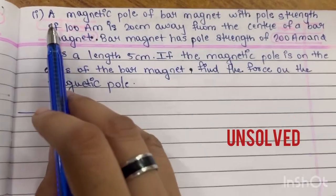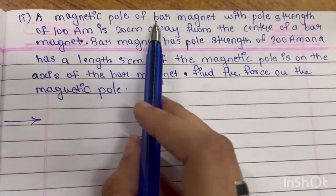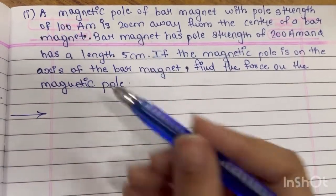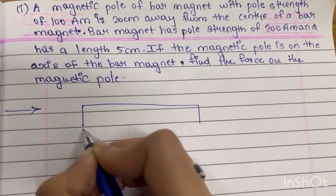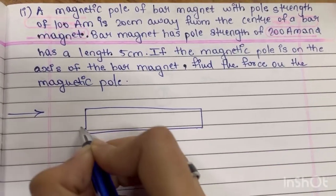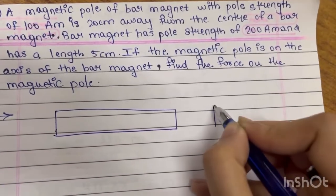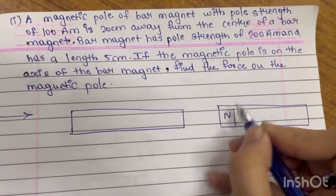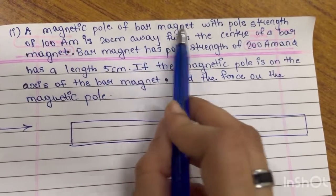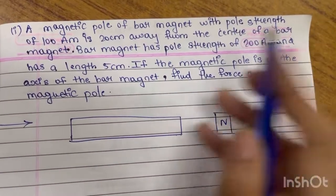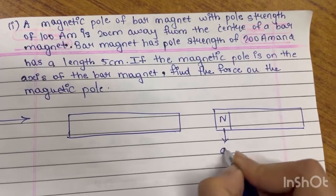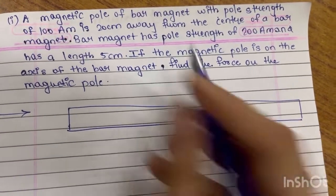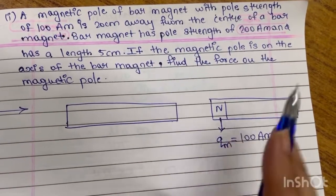Starting with the first unsolved numerical of your exercise. A magnetic pole of a bar magnet has pole strength 100 ampere meter. Here you have one magnet and another magnet. Suppose this is the north pole of that bar magnet with pole strength 100 ampere meter, and it is kept 20 centimeter away from the center of another bar magnet.